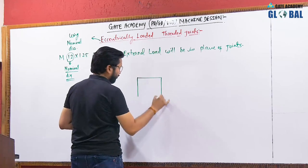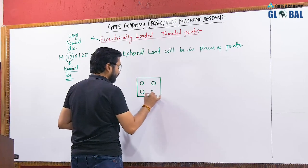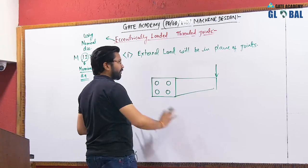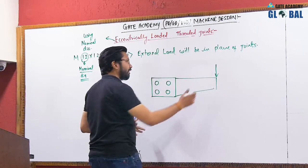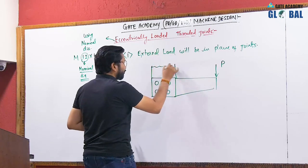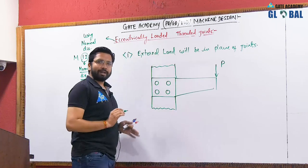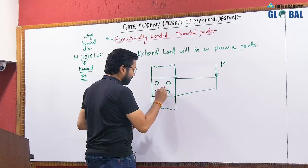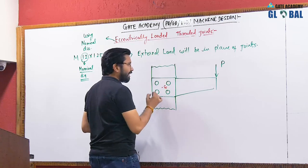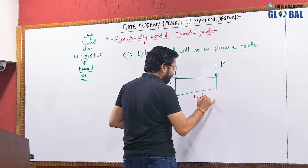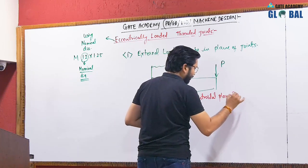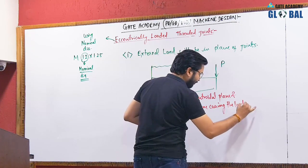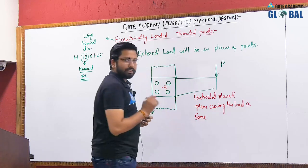Let us see the diagram. If we have a threaded connection like this, with a bracket and an external load — this is the x-y plane — then the load, the external load and the bolts, both are in the x-y plane only. The bolt as well as the load is in the same plane. Here we have the centroid of the bolt arrangement, that is G, the center of the bolts. The centroidal plane and the plane carrying the load are the same. This is the first category.